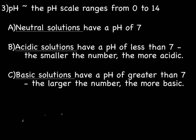And the next way to tell if an unknown substance is acidic or basic is something called the pH. And the pH scale ranges from 0 to 14. Neutral solutions have a pH of 7. So an example of a neutral solution would be water.